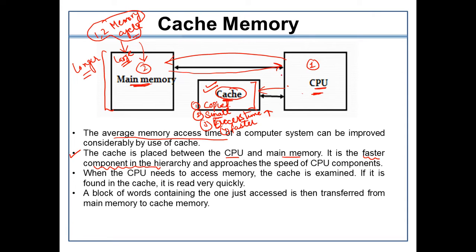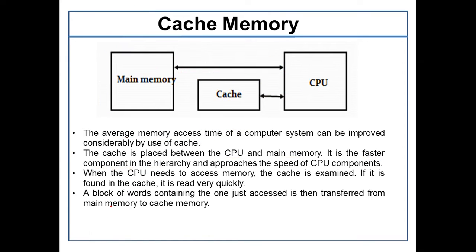Whenever the CPU needs to access memory, it will always first approach the cache memory. If the data is present in the cache memory, it will simply take the data from there. If for any reason the data is not present in cache, only then will the CPU refer to the main memory. In the next memory cycle, that block of data will be taken from the main memory and shifted into the cache. A certain procedure is used to determine what kind of data is stored in cache memory.